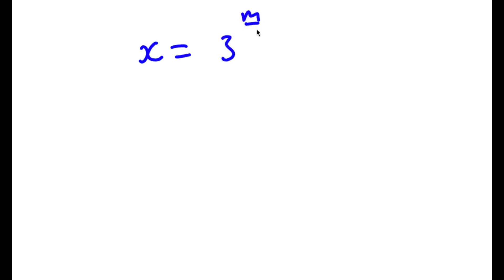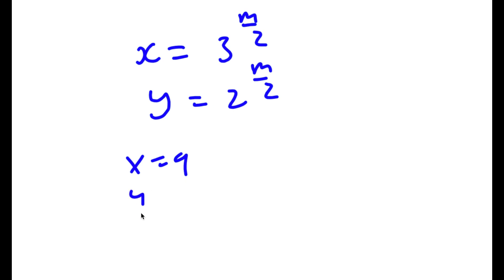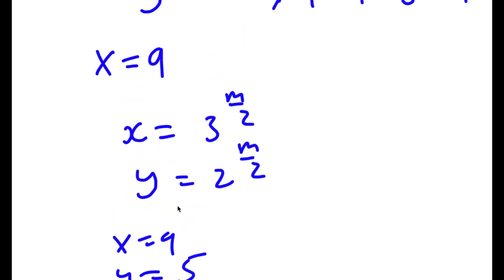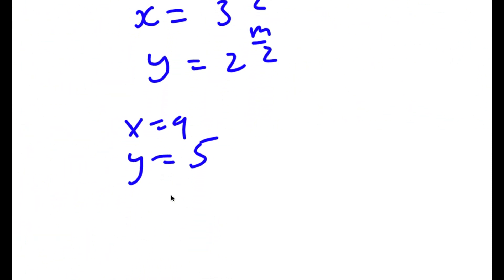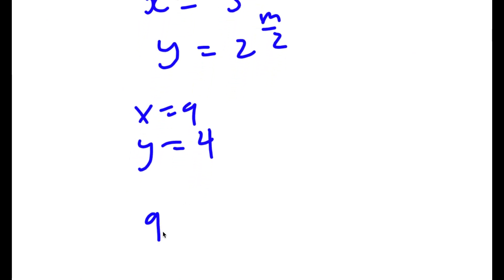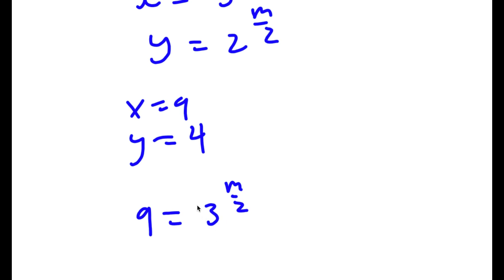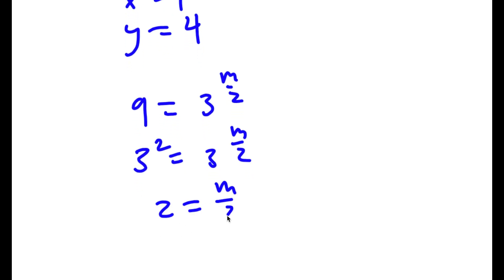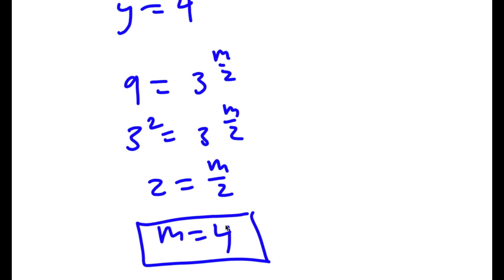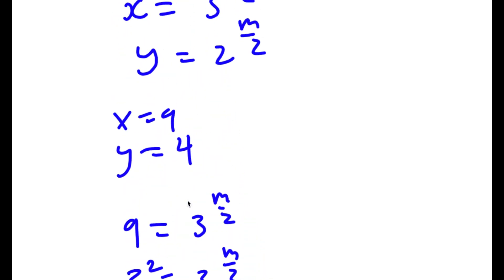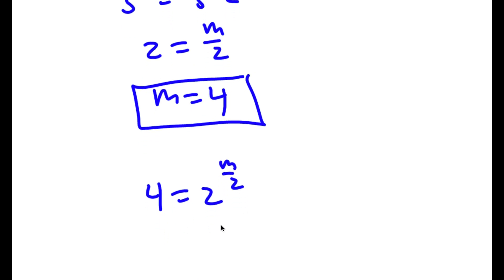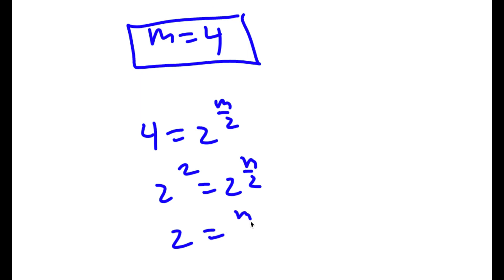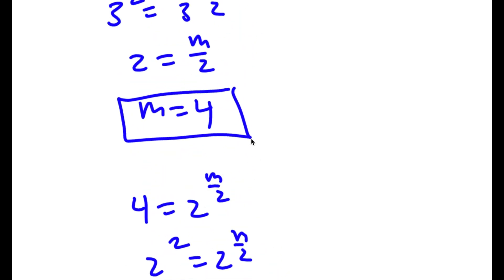Remember, x equals 3 to the power of m over 2 and y equals 2 to the power of m over 2. Since x equals 9, we have 9 equals 3 to the power of m over 2. And 9 is the same as 3 squared, so 3 squared equals 3 to the power of m over 2, meaning 2 equals m over 2, so m equals 4. Checking with y: 4 equals 2 to the power of m over 2. Since 4 is 2 squared, we get 2 squared equals 2 to the power of m over 2, again giving m equals 4. So the value of m is 4.